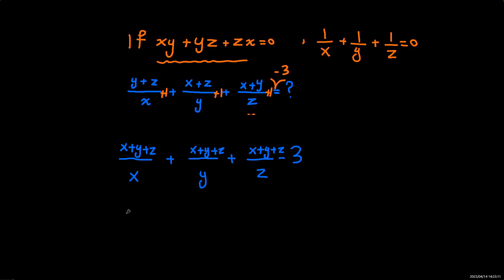So if I do it, it will be x plus y plus z. It's the same among all terms. So what will be left is 1 over x plus 1 over y plus 1 over z.